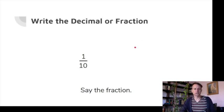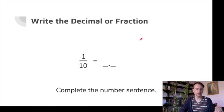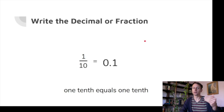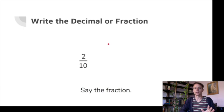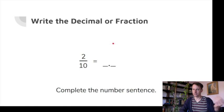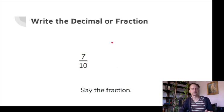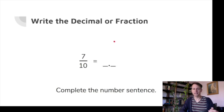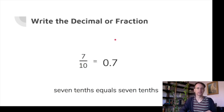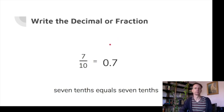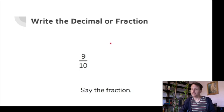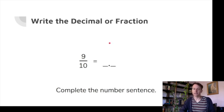Warming up: write the decimal or fraction. This fraction is one-tenth. As a decimal we'd write 0.1, though we'd say 'one-tenth' — remember that distinction between how we say it and how we write it. Next: two-tenths as a decimal is 0.2. Two-tenths equals two-tenths. Seven-tenths we'd write as 0.7, but we'd say 'seven-tenths' when reading it as a math number.